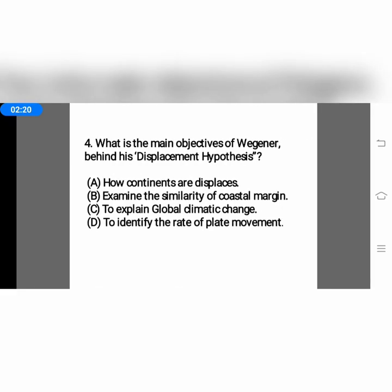The next question: what was the main objective of Wegener's displacement hypothesis? Option A, how continents are displaced; option B, examine the similarity of coastal margins; option C, to explain global climatic change; or option D, to identify the rate of plate movement. Since Wegener was a meteorologist, his hypothesis aimed to explain global climatic change — the correct answer is option C.